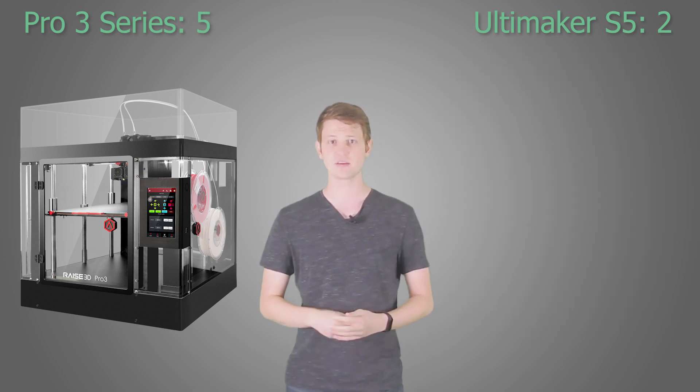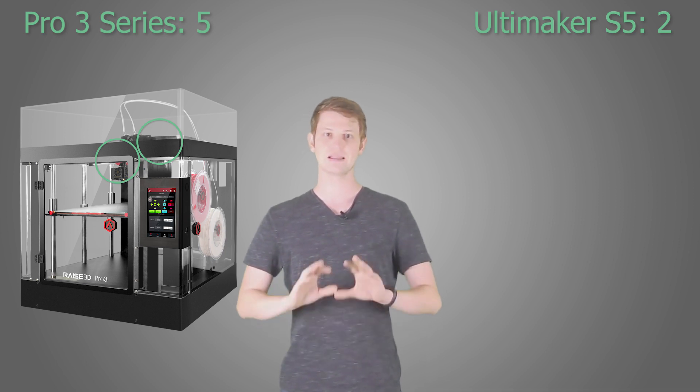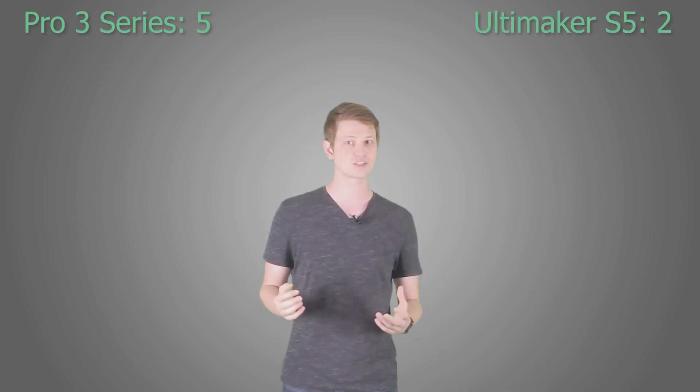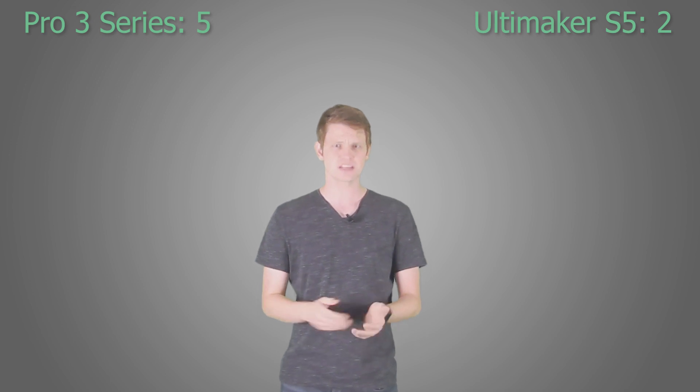In a similar vein, the door and top cover of the Pro 3 series are equipped with magnets, allowing sensors to recognize when the closed build volume is opened and automatically pause the print. This is of particular interest for schools or other education settings where student safety is paramount. The Ultimaker sadly does not come with this feature, despite often being marketed towards such institutions.